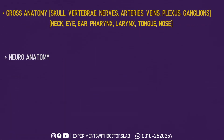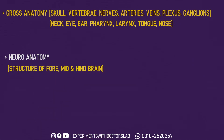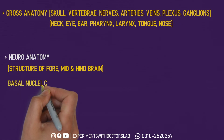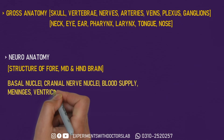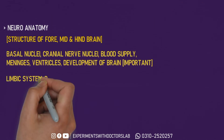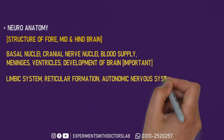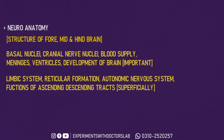Then let's talk about Neuroanatomy. Neuroanatomy does not need to be studied in very deep detail — you need to learn superficially the gross structures: forebrain, midbrain, and hindbrain. Some important chapters that require more detail are basal nuclei, cranial nerve nuclei, blood supply, meninges, ventricles, and development of brain. Limbic system, reticular formation, and autonomic nervous system can be covered superficially. Ascending and descending tracts are also superficial functions.